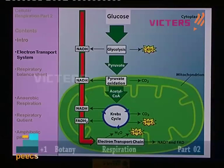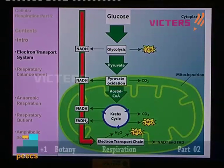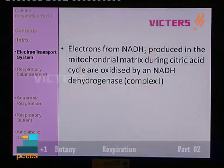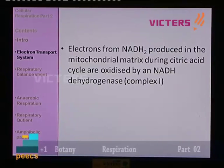Glucose is converted to simpler molecules by the processes like glycolysis and Krebs cycle, along with the generation of energy-rich molecules. Electrons from NADH2 produced in the mitochondrial matrix during the citric acid cycle are oxidized by a particular enzyme known as NADH dehydrogenase. So here we are starting the process of ETS.